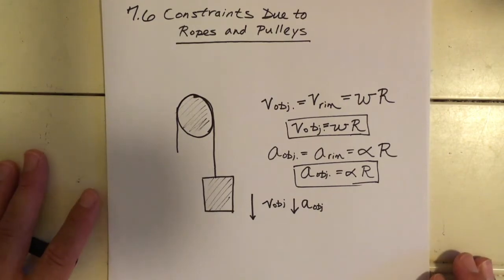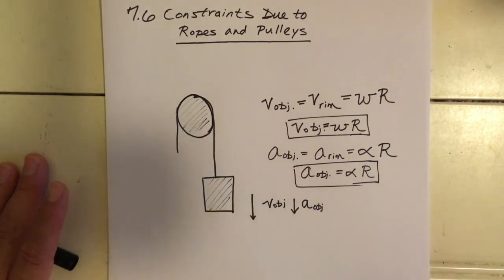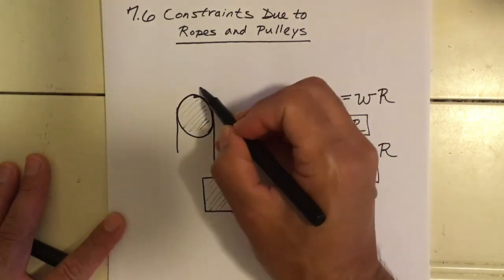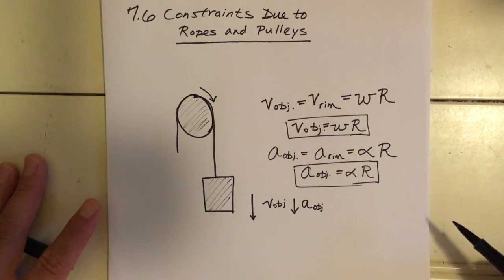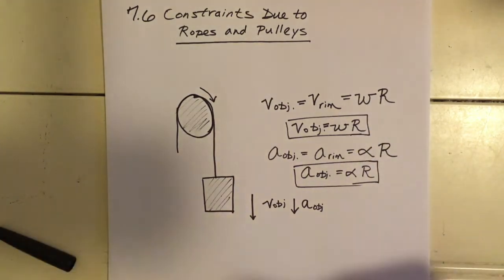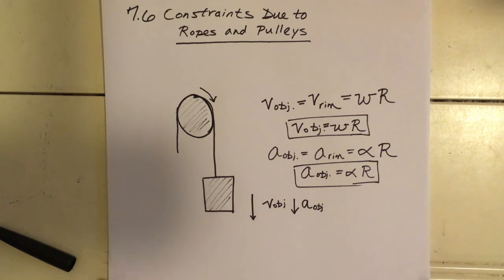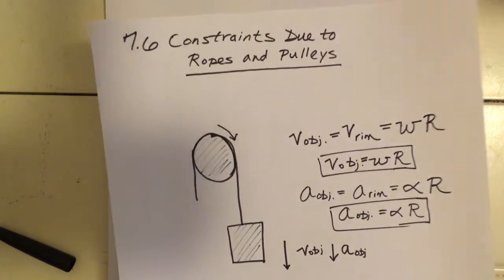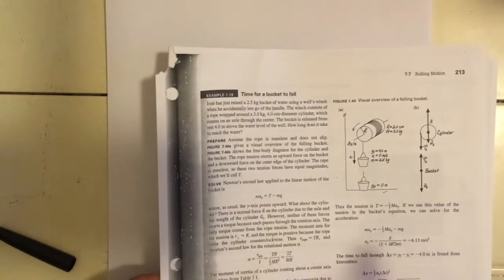One thing to note: we assumed the velocity is in the same direction. If the cylinder were rotating the other way, that would be a negative angular velocity. We won't worry too much about signs — just ensure the magnitudes match and the directions align. I'll do this example slightly differently than the textbook because of that.